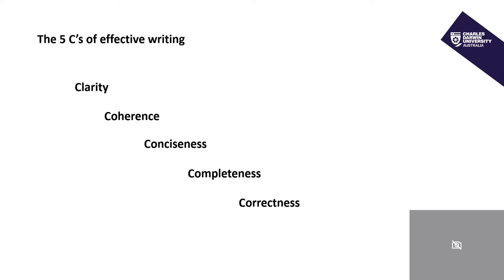Coherence, the second of the five C's of writing, refers to the logical flow of the text. Each sentence in an ideal paragraph would logically build on the content of the previous sentence, and the overall flow can be improved by the use of various coherence devices such as linking words and the use of reference.